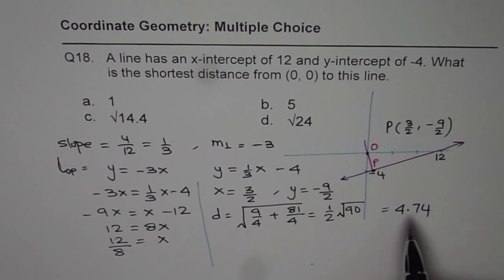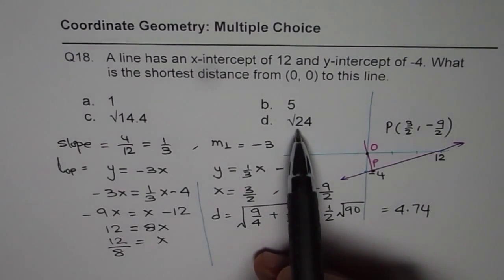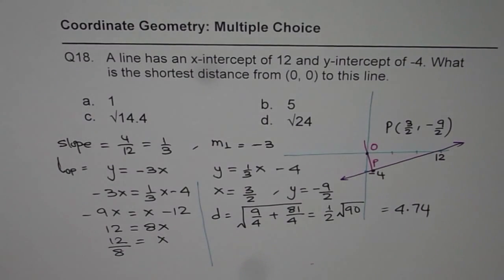4.74 is less than 5, very close to square root of 24. So that is our answer. Let's check: square root of 24 is 4.89. So square root of 24 is 4.89.